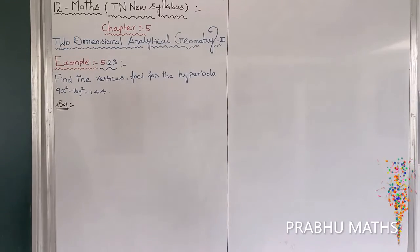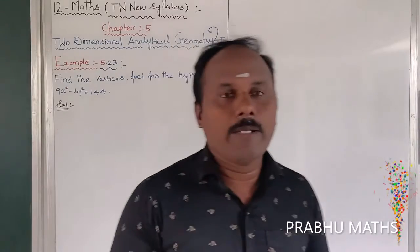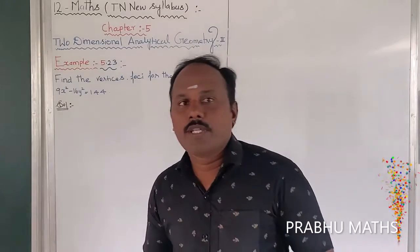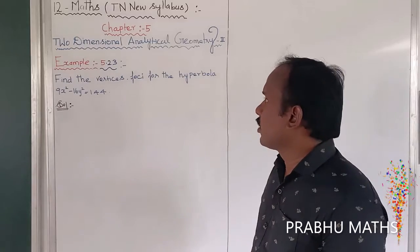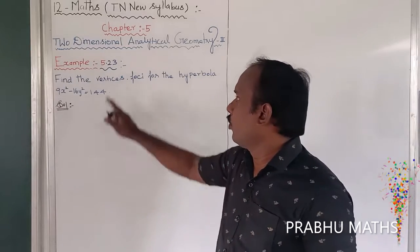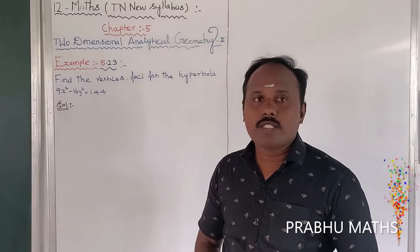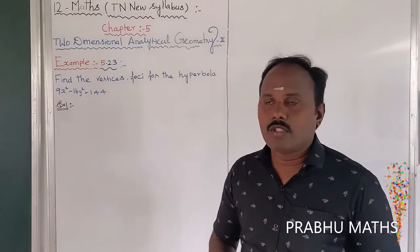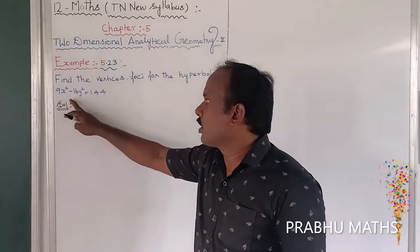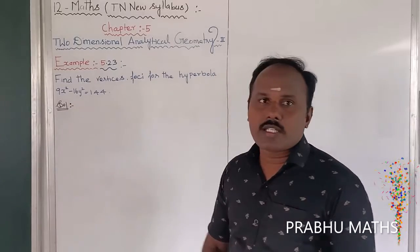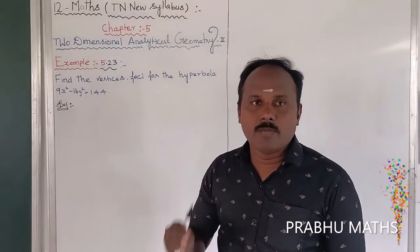Example 5.23 — find the vertices and the focus of the hyperbola. First, find out the focus and the vertices. So first find the center, then do the general form conversion. The conic section is given, and we need to convert to the general form.